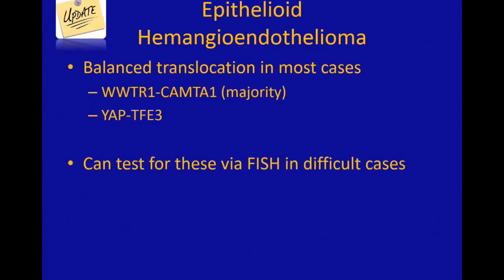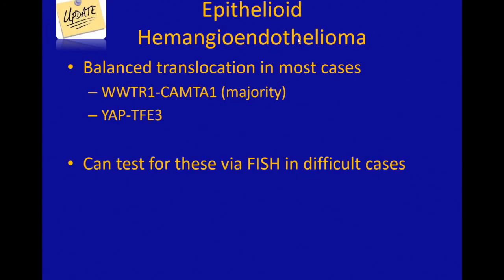More recently, Brian Rubin at Cleveland Clinic and others have described a translocation in epithelioid hemangioendothelioma: the WWTR1-CAMTA1 translocation, found in the majority of EHEs. A small subset will have a different translocation, YAP-TFE3. You can test for these via FISH in difficult cases. I actually have one right now that Brian Rubin is doing FISH on, because I want to be sure it's not an unusual malignant EHE rather than epithelioid angiosarcoma, as there's a treatment difference for the patient. So FISH is a useful test in challenging cases.